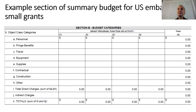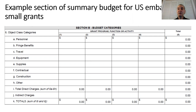Here is an example section of a summary budget for USA Embassy small grants projects. This is just one section of the summary budget sheet. We see the categories on the left where you would sum all the expenses in each of those categories, and they might be divided up by year — just an example of how one of these sheets might work for a program.